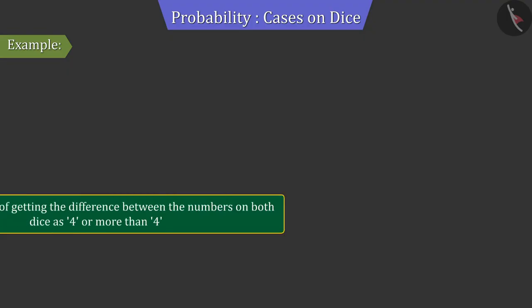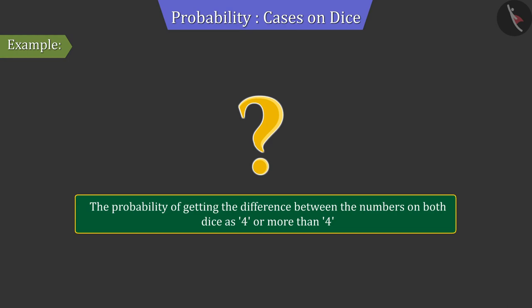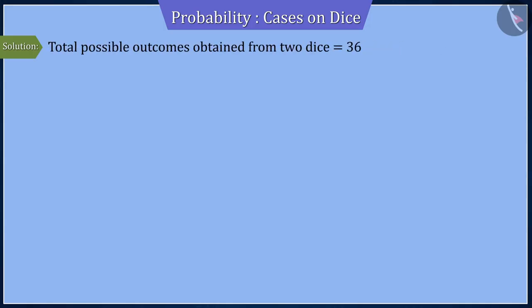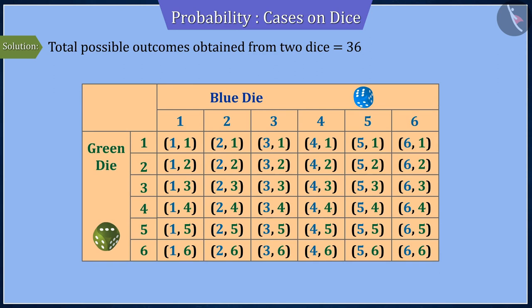Can you find the probability that the difference between the numbers on both dice is at least 4 or more? Let's look at the outcomes obtained from both dice.